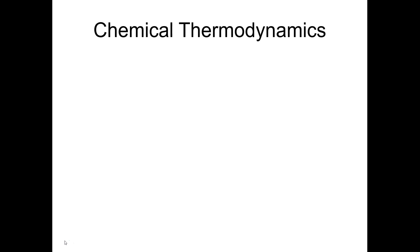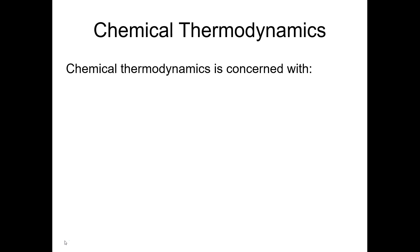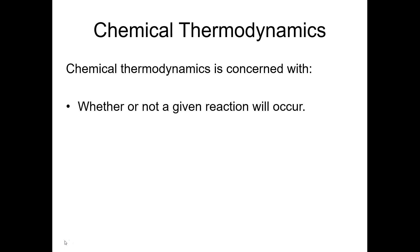What do we mean when we're talking about chemical thermodynamics? It's really concerned with just a couple of things. Chemical thermodynamics tries to answer the question of whether or not a given reaction is going to occur, and if that reaction is going to occur, to what extent will that reaction or process occur? The second point, which has to do with equilibrium, we'll tackle later in the year. What we're going to talk about in Chapter 19 right now is answering the first question of whether or not a given reaction will occur.